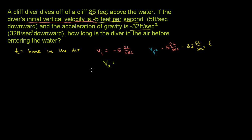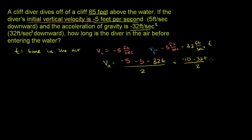The average velocity is just the average of the initial and final velocities. So it's going to be (negative 5 + (negative 5 minus 32t)) all over 2. This simplifies to negative 10 minus 32t over 2, which equals negative 5 minus 16t. So that's our average velocity.